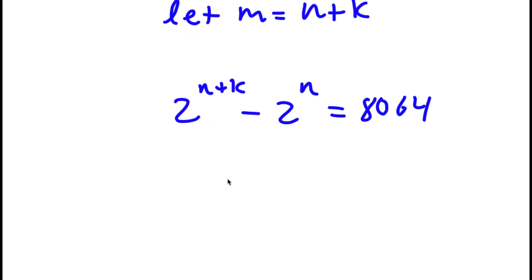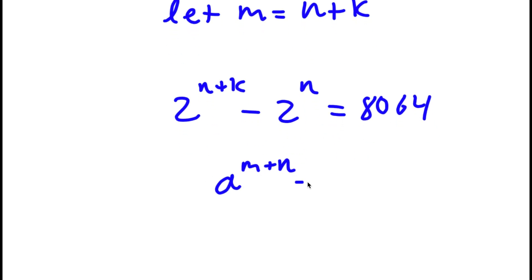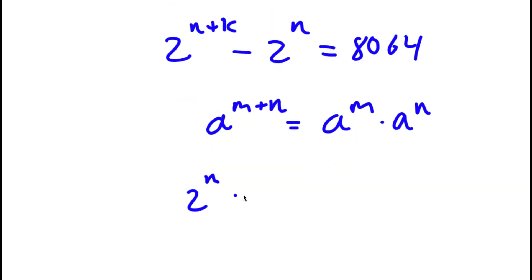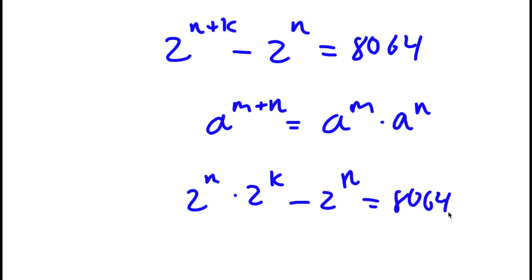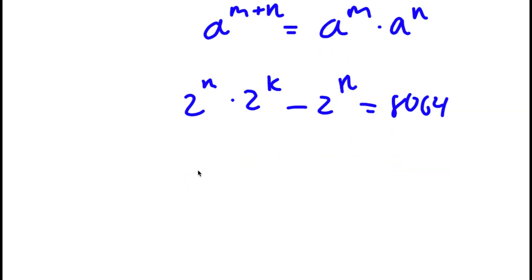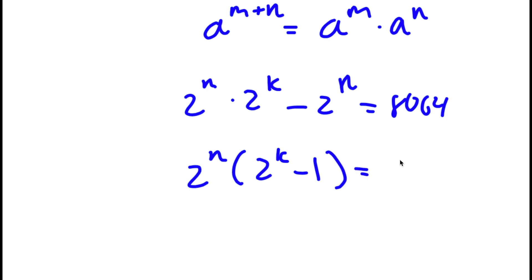Using the property that a to the power of m plus n equals a to the power of m times a to the power of n, I can rewrite 2 to the power of n plus k as 2 to the power of n times 2 to the power of k, minus 2 to the power of n equals 8,064. Factoring out 2 to the power of n gives 2 to the power of n times 2 to the power of k minus 1 equals 8,064.